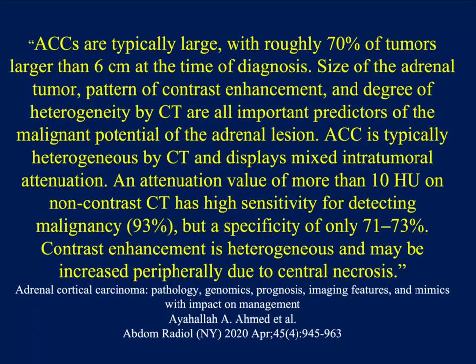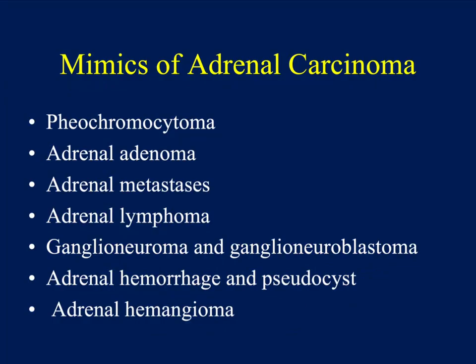Adrenal cortical carcinomas are typically heterogeneous by CT and display mixed intratumoral attenuation. An attenuation value of more than 10 Hounsfield units on non-contrast CT has a high sensitivity for detecting malignancy, but a lower specificity. Contrast enhancement is heterogeneous and may be increased peripherally due to central necrosis. Adrenal cortical carcinoma can be very vascular, looking like a pheo; very necrotic, looking like a necrotic tumor or even a bleed; or it can present as a relatively benign-looking lesion, typically when smaller and presenting early due to hyperfunction.